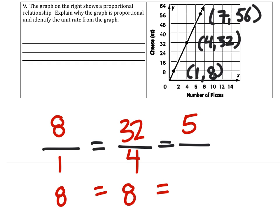And what is 56 divided by 7? It's 8. So 8 equals 8 equals 8 is true. All of those are correct.